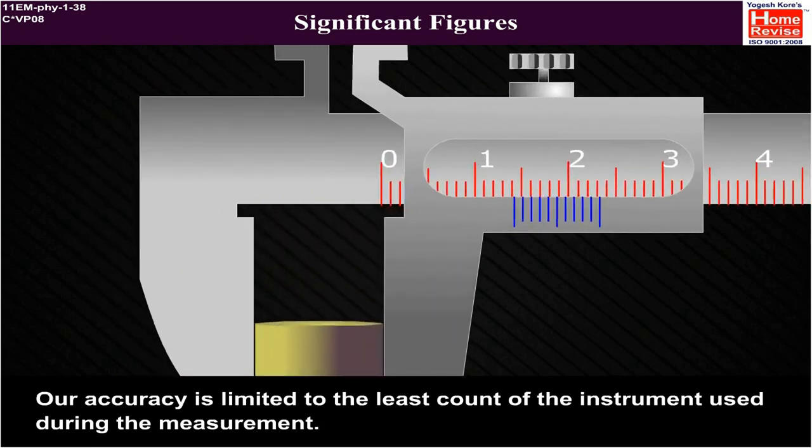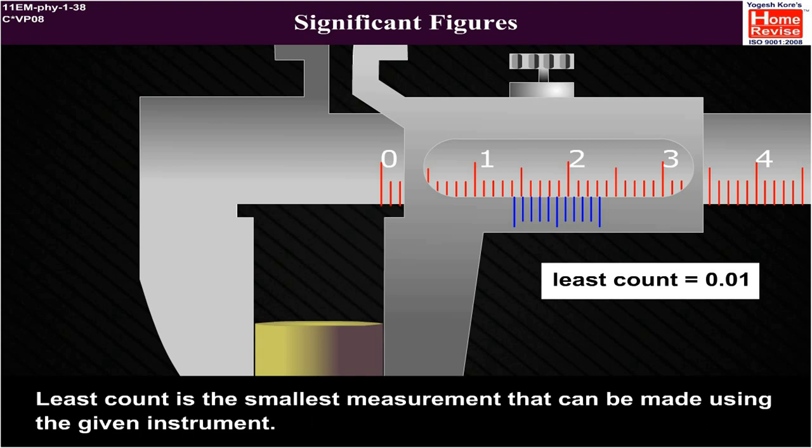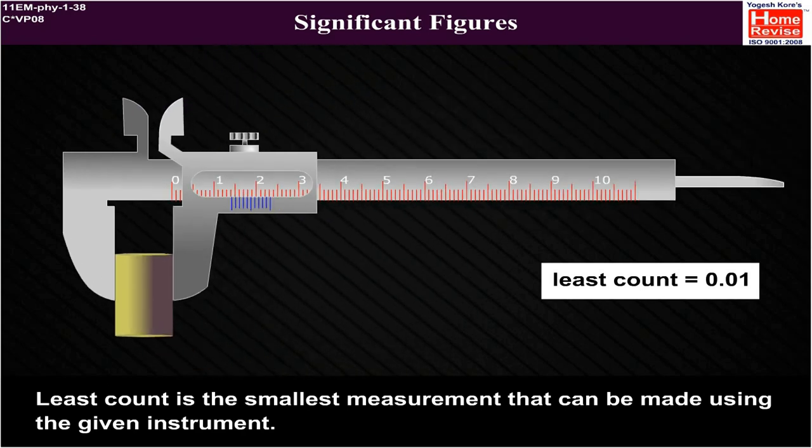Our accuracy is limited to the least count of the instrument used during the measurement. Least count is the smallest measurement that can be made using the given instrument.